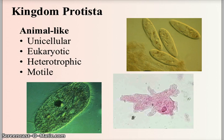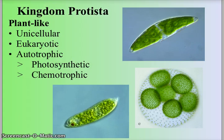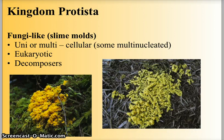The protist kingdom are also single-celled, unicellular. There are animal-like protists, which are eukaryotic with an organized nucleus, heterotrophic — meaning they have to go out and get their food — and motile, meaning they are able to move. We also have plant-like protists, which are unicellular, eukaryotic, and autotrophic because they can make their own food, typically being photosynthetic, but sometimes chemotrophic — able to make food from chemicals in their environment.